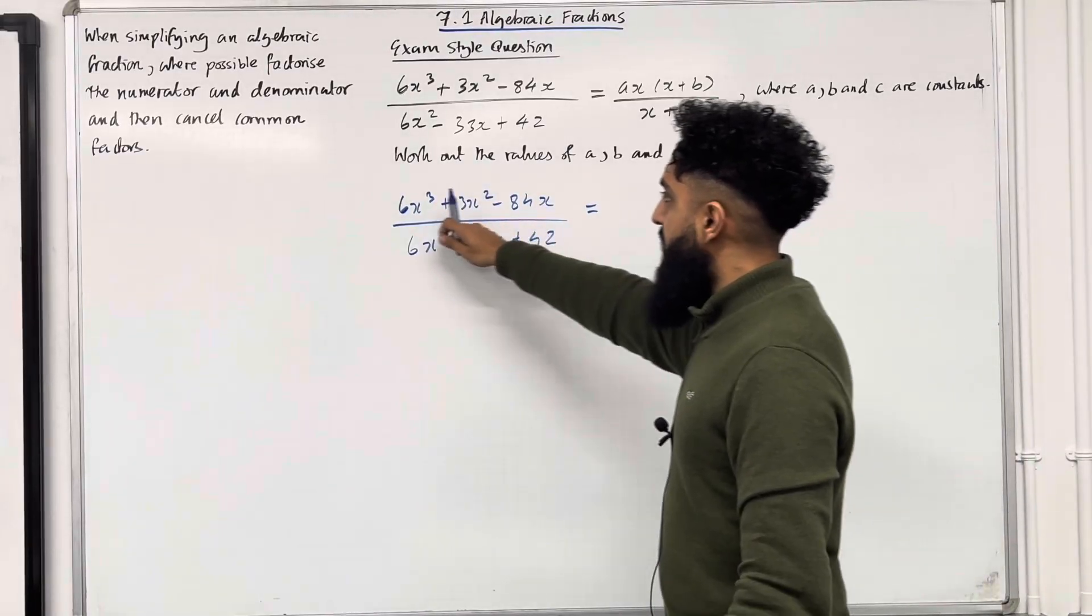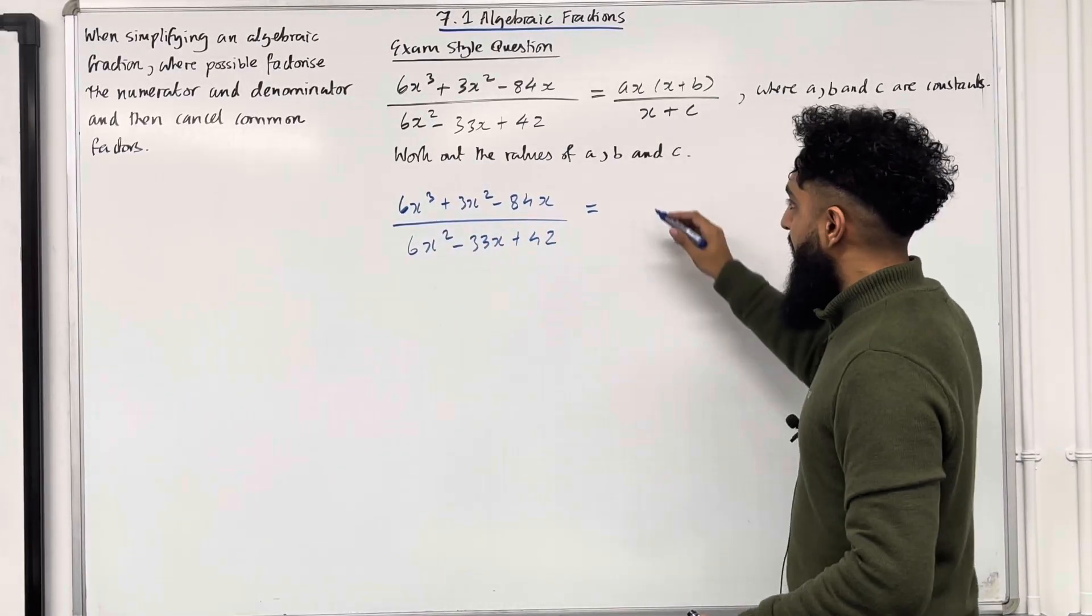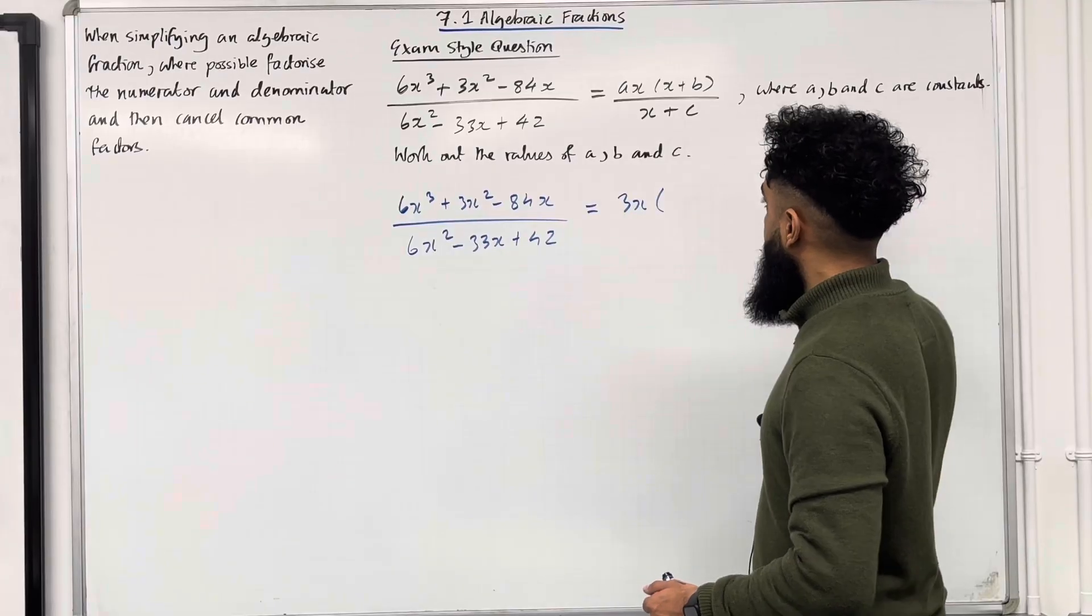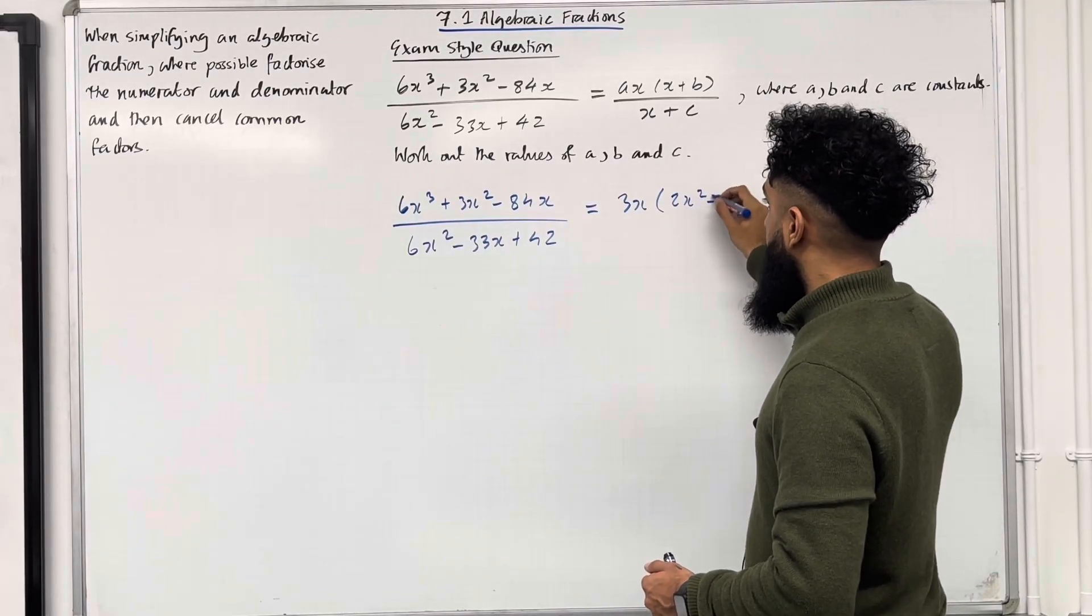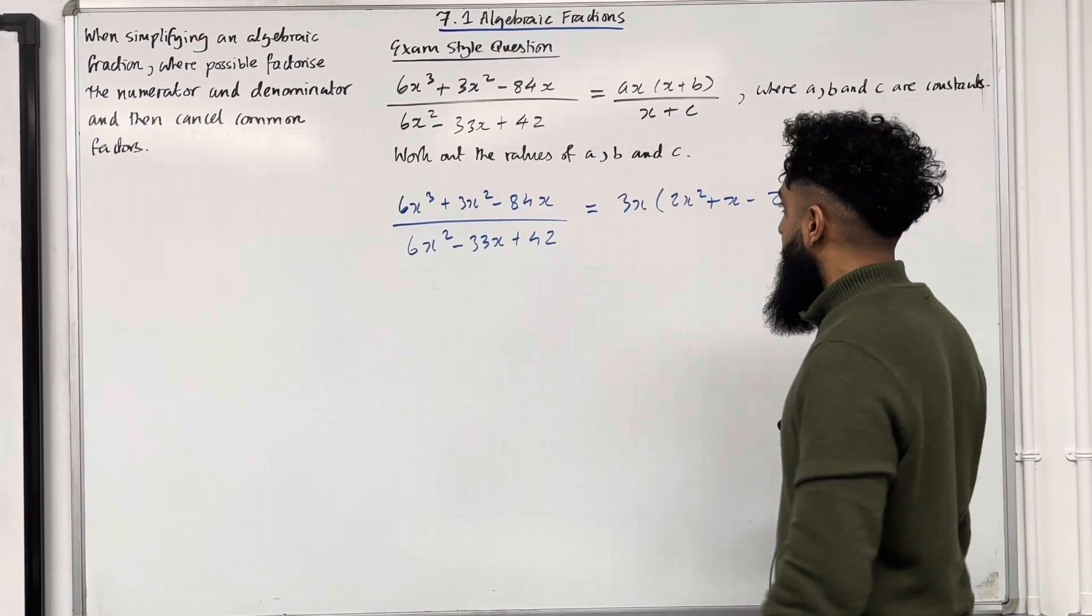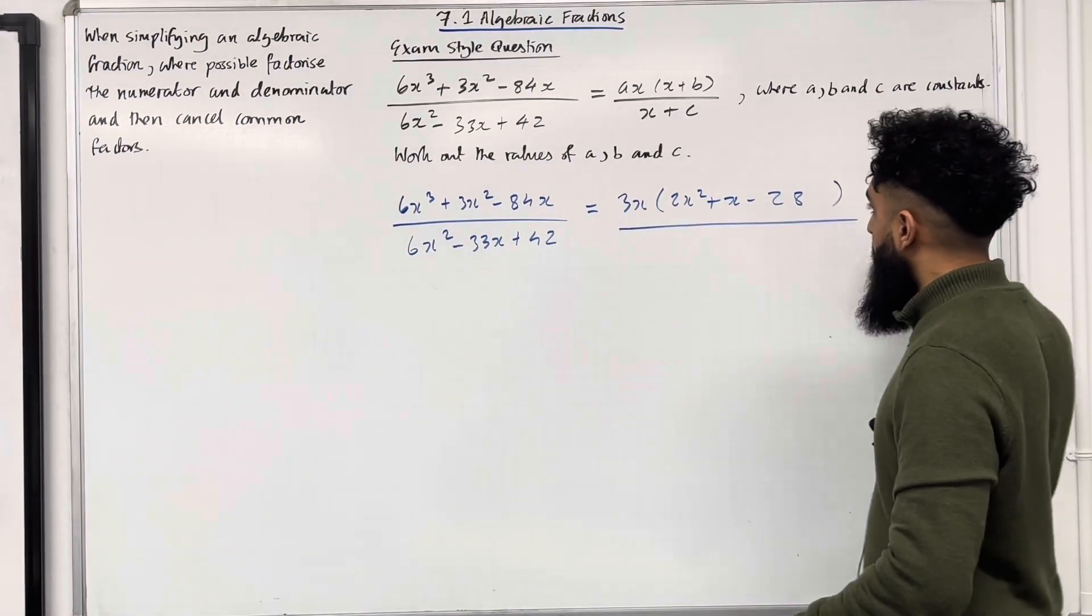Now over here in the numerator, we can take out a common factor of 3x. And so inside the bracket, we will have 2x squared plus x minus 28, divide by.